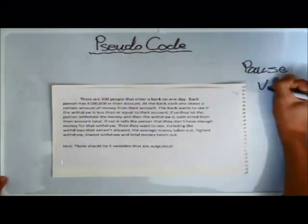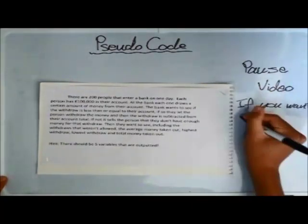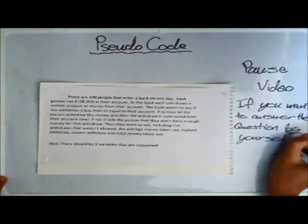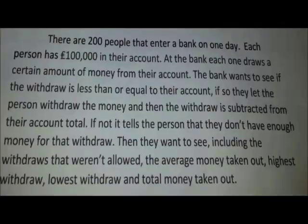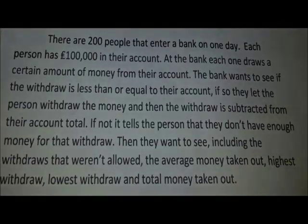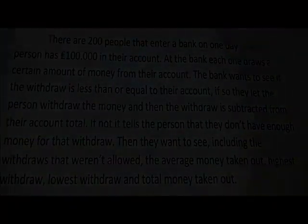Now let's look at the question. There are two hundred people that enter a bank on one day. Each person has a hundred thousand pounds in their account. Each person draws a certain amount of money. The bank checks if the withdrawal is less than or equal to their account balance — if so, the withdrawal is allowed and subtracted from the account. If not, the person is told they do not have enough money.